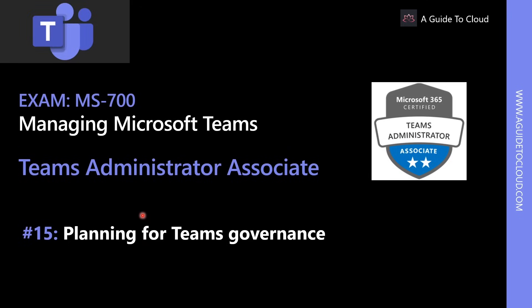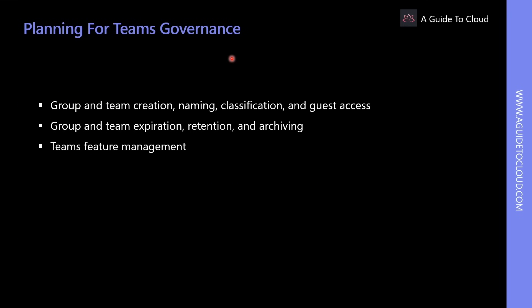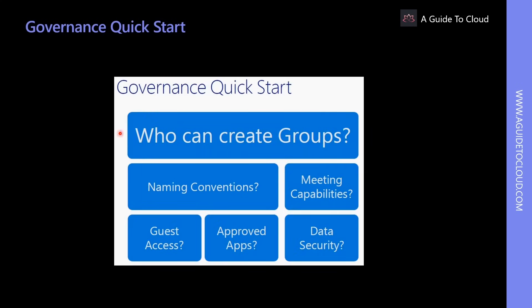Microsoft Teams provides a rich set of tools to implement governance capabilities for organizations. When planning for governance, you should consider: group and team creation, naming, classification and guest access, how to manage Teams feature management, and how to manage group and Teams expiration, retention, and archiving. Organizations should focus on who can create groups, what naming conventions to set, what meeting capabilities to provide, whether to include external third-party apps, whether to enable guest access, and how to manage data security.